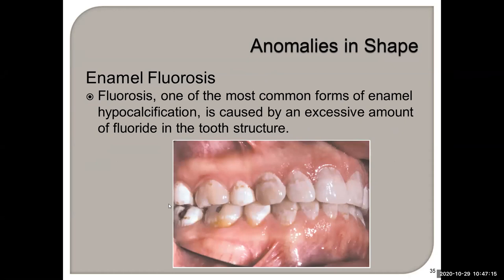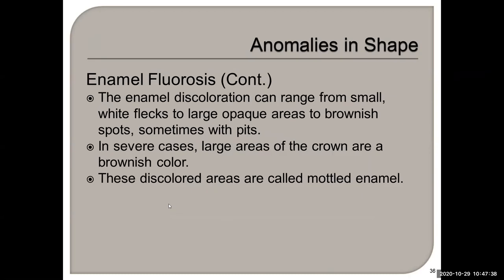Fluorosis can range from mild to severe and causes hypocalcification due to an excessive amount of fluoride. It can appear as small white spot lesions, or dark and brown with brownish spots and pits. When it's really severe it's called mottled enamel.